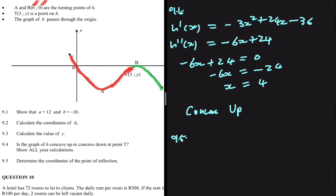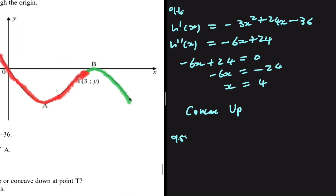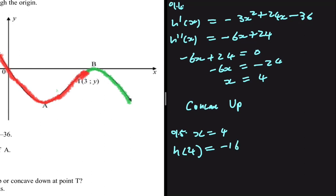For 9.5, we determine the coordinates of the point of inflection. The point of inflection is where the concavity changes, which we found is at x equals 4. Substituting x equals 4 into h(x) gives h(4) equals minus 16. So the coordinates of the point of inflection are (4, minus 16).